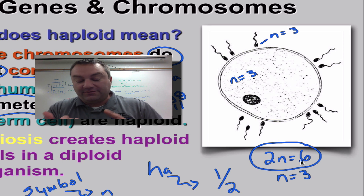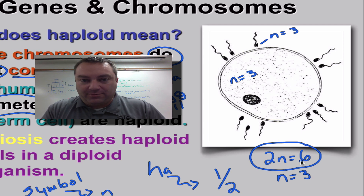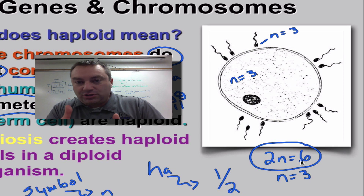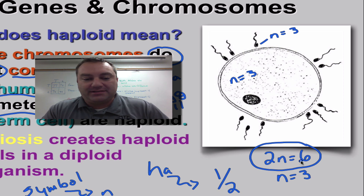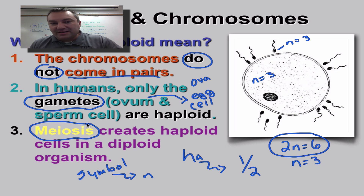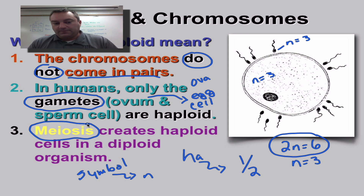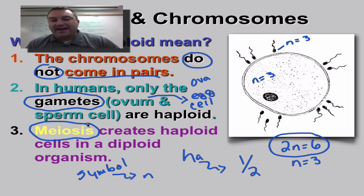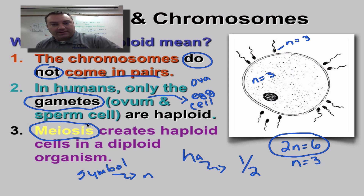So to summarize: diploid means chromosomes come in pairs; haploid is half of the diploid number, not in pairs. The formula is 2n divided by two equals n — basic algebra. Before we end, meiosis is a type of cell division similar to mitosis, but one cell divides into four instead of two. It creates the gametes we discussed here, and that's what the next episode is all about.